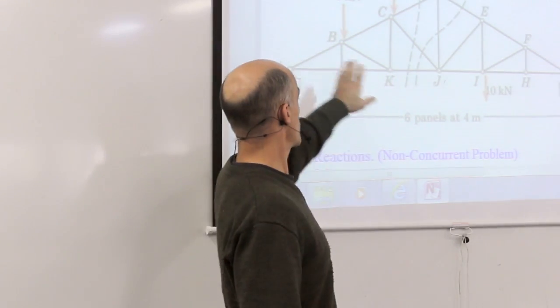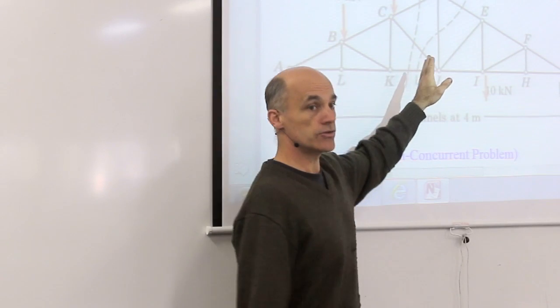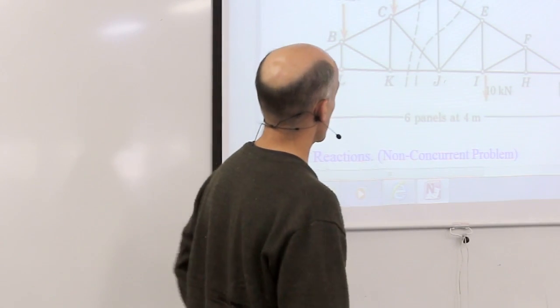It turns out that the method of joints is a concurrent force method, and the method of sections is a non-concurrent force method. So let's have a look at the method of sections on this truss.